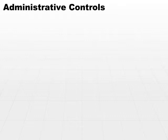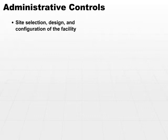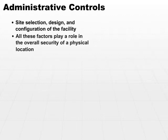The first type of control that we'll discuss is an administrative control. Administrative controls are upfront design-based controls, and they involve things such as site selection of your facility, the design of your facility, and the configuration of your facility. All these factors play a role in the overall security of a physical location.